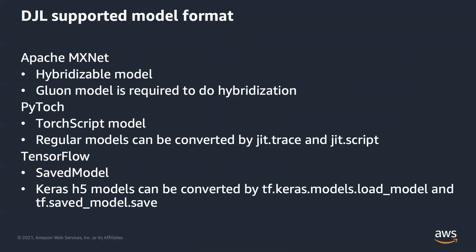DJL supports various engines and each of them has certain model formats to follow. For Apache MXNet, hybridizable model is supported — you need to hybridize your model and save both the model architecture symbol.json and parameters .param file. For PyTorch, TorchScript format is supported; if you have Python model code, try to use torch.jit.trace or script to compile the model. For TensorFlow, saved model format is supported. If you have a Keras model, you can use Keras load model to get the Keras model object and use tf.saved_model.save to save it as saved model format.